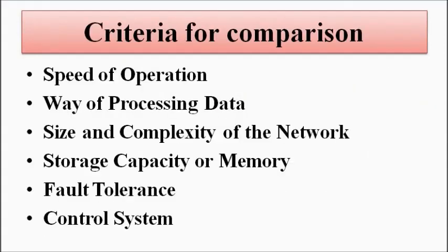The criteria on the basis of which we can compare the two neurons — the biological or natural and the artificial — are: speed of operation, the way in which data is processed, size and complexity of the network, storage capacity or memory capacity, fault tolerance, and the control system.